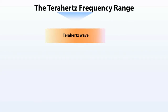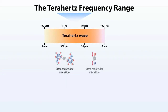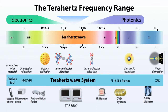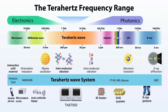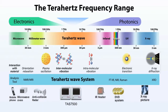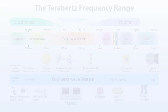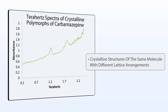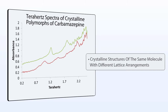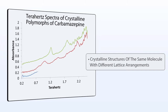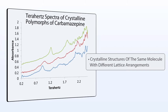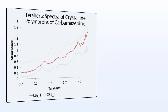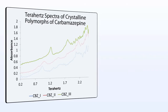Intermolecular interactions such as crystalline phonon vibrations and hydrogen bonding dominate the terahertz frequency range that lies in the gap between the microwave and infrared regions. Polymorphs are crystalline structures of the same molecule with different lattice arrangements. The terahertz spectra of polymorphs often exhibit unique fingerprints, as shown here for the API carbamazepine.